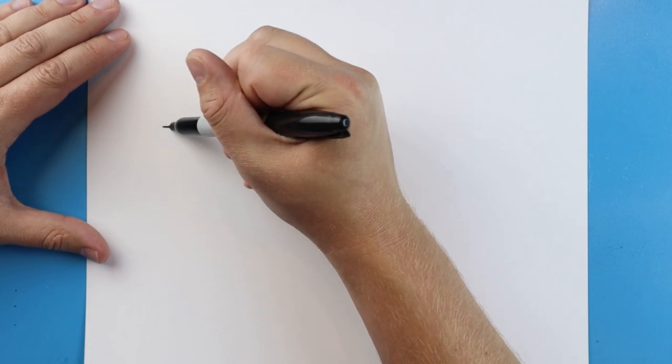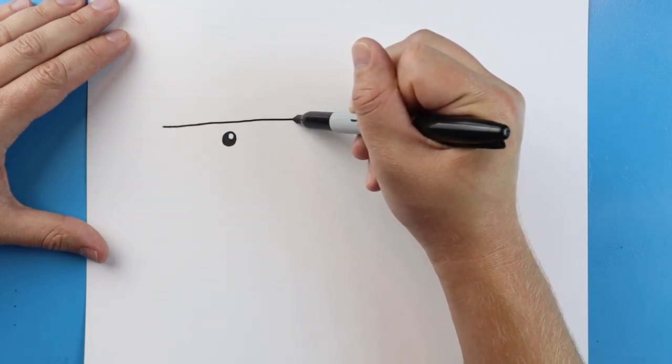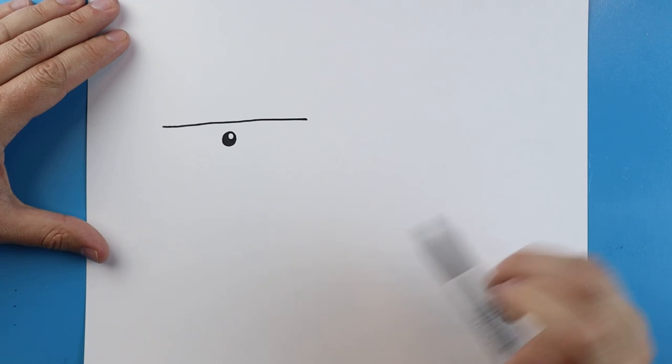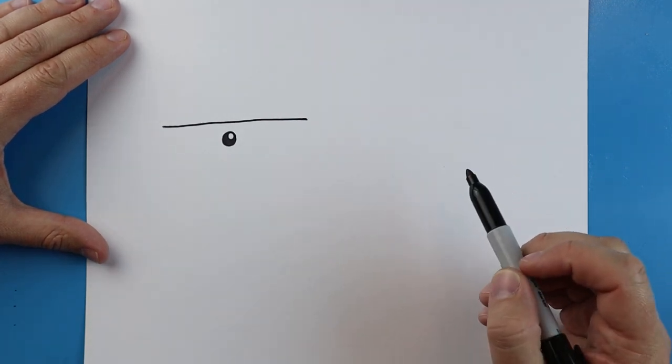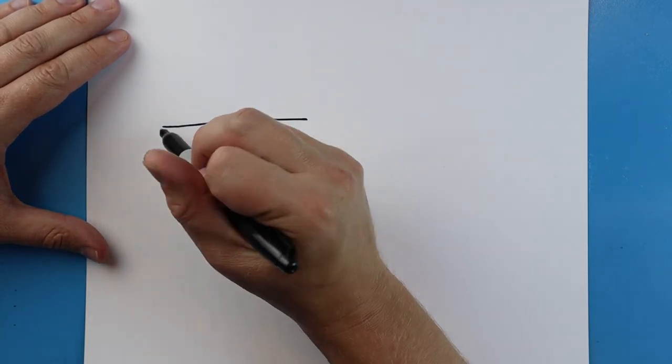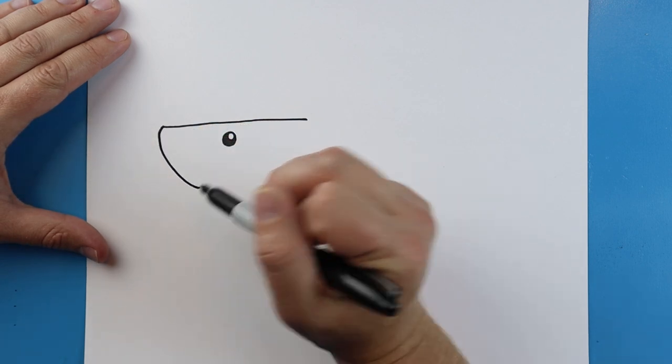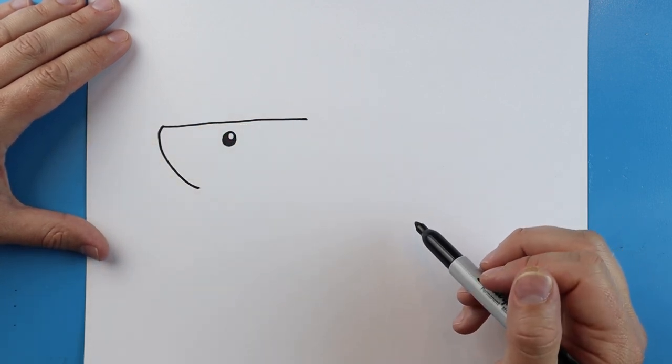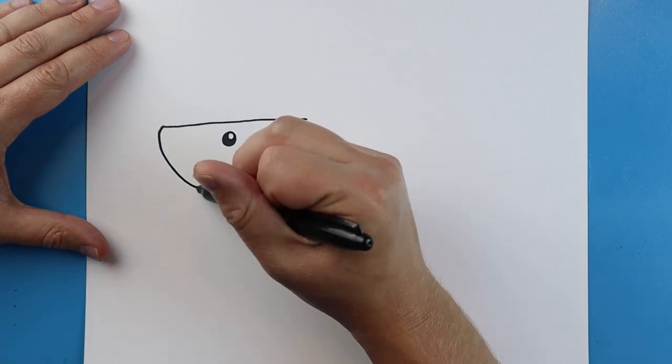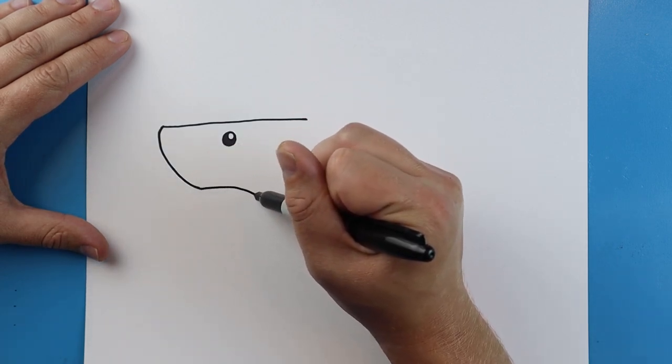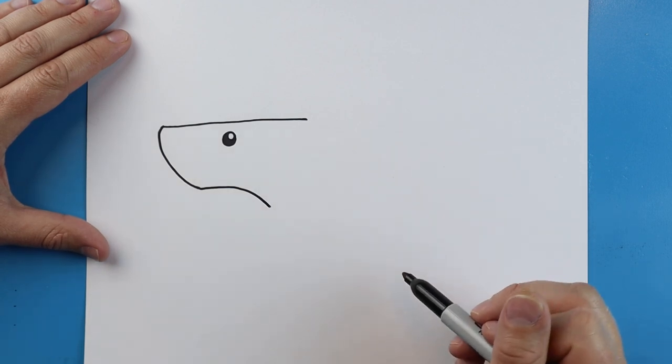Now I'm going to start right here and make a long line right above the eye. You can see the eye is kind of in the middle. Then starting here I'm going to make a line that's going to curve down. Then I'm going to draw a line that's just going to come down like this.